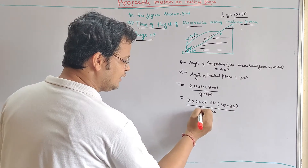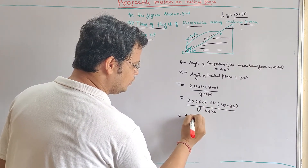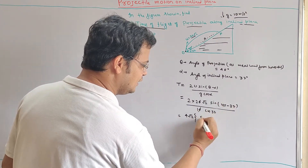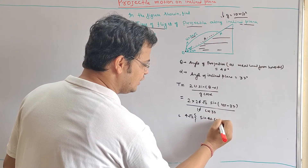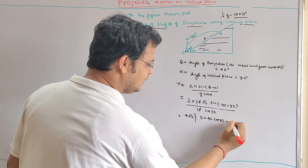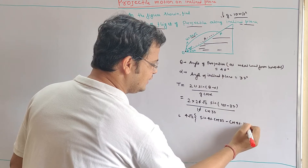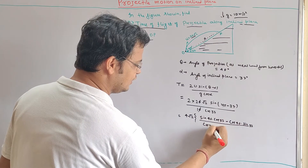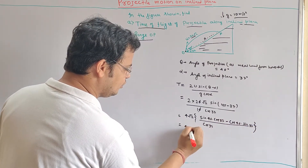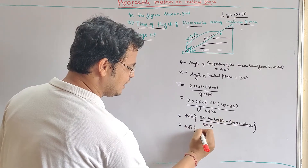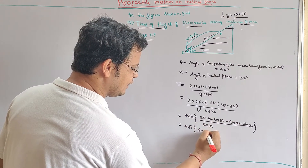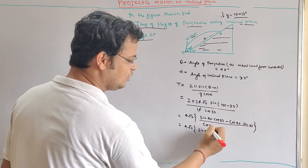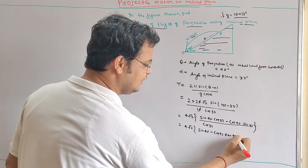If we calculate this, we simplify to get 4 root 2. Now applying the sine A minus B formula: sine 45 cos 37 minus cos 45 sine 37. And the denominator is cos 37. So we have 4 root 2 multiplied by the expression, which simplifies further.